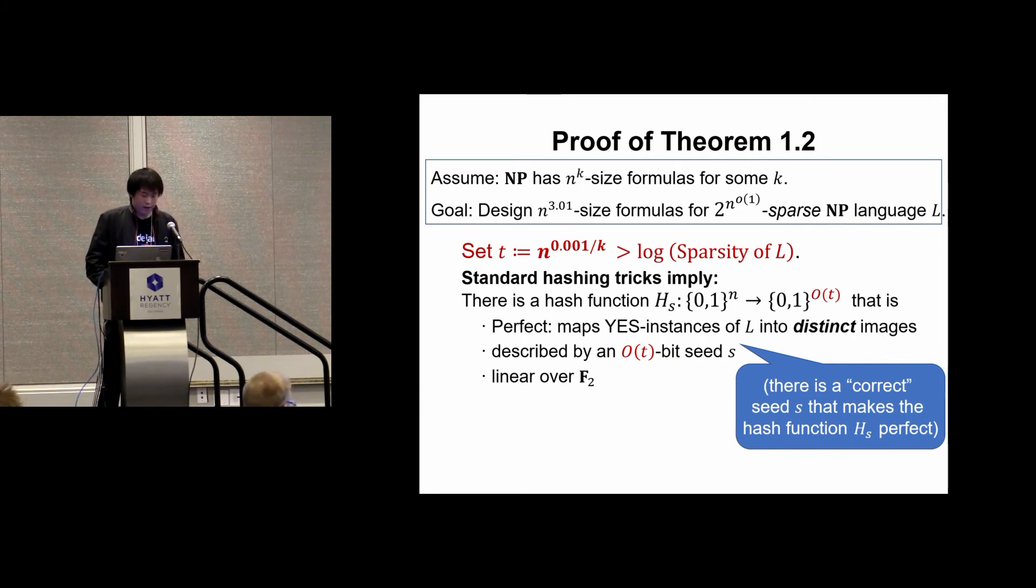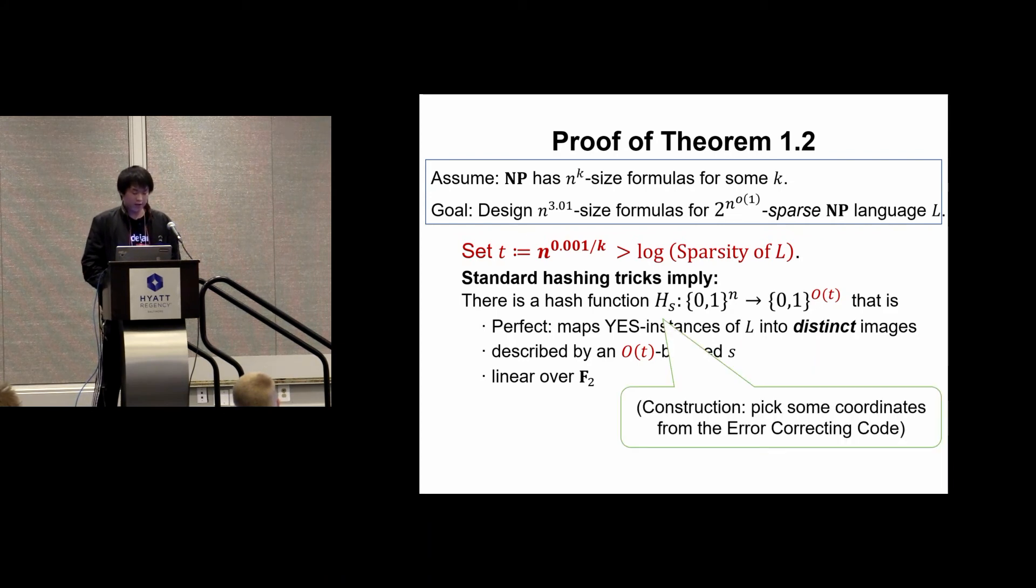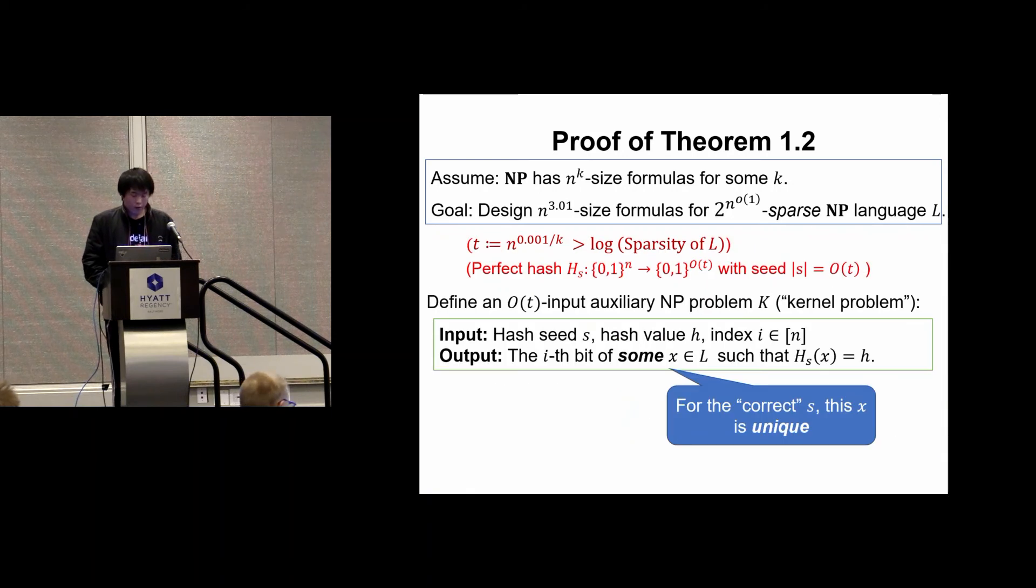There's an additional property that the hash function is linear over F2. The construction of this hash function is quite standard. We simply pick some coordinates from the error-correcting code and let them be the hash value. Using this hash function, we are going to define the auxiliary NP problem K. The input is a hash seed and a hash value and the index i. The output of this problem should be the i-th bit of a yes instance which has hash value equal to H. If we pick the correct S, which makes the hash function perfect, then this X should be unique, so there is no ambiguity.